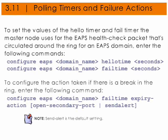Here's how to manually configure the hello timer and fail timer the master node uses for EAPS health check packets that are circulated around the ring for an EAPS domain. You would enter the following commands: configure EAPS, the EAPS domain name, hello time, and the amount of seconds. Configure EAPS, the EAPS domain name, fail time, and the amount of seconds.